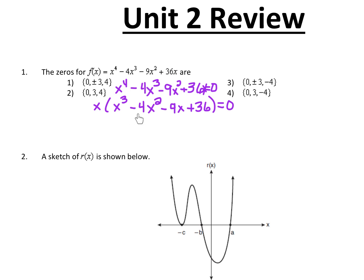Now within the parentheses, we have four terms. So if we have four terms, what we want to do is factor by grouping. Don't forget about the x out front — it keeps coming down. We want to open a parenthesis before we do factor by grouping. If the parentheses mess you up, you can always use a square bracket to separate it — bracket means the same thing as parentheses.